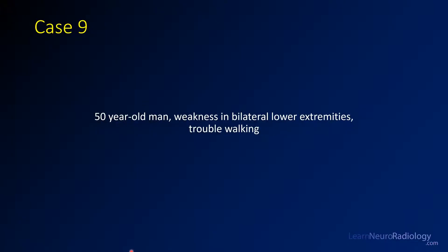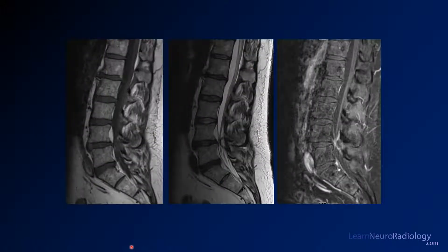Case 9 is a 50-year-old man with weakness in the lower extremities and difficulty walking. Here you have some images from an MR through the lumbar spine.